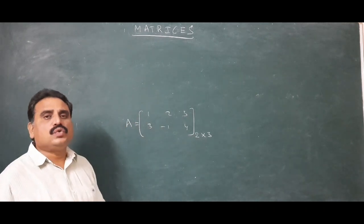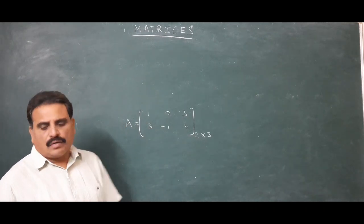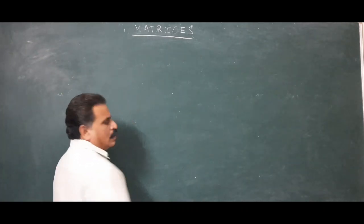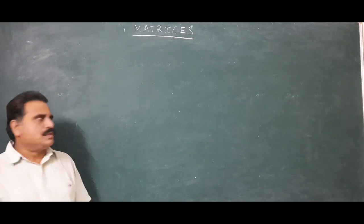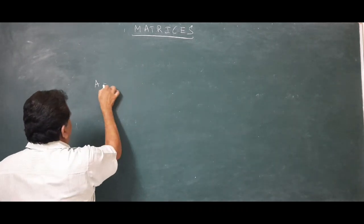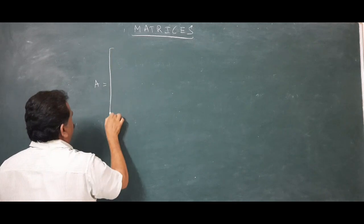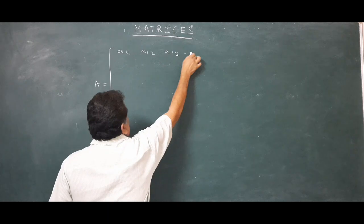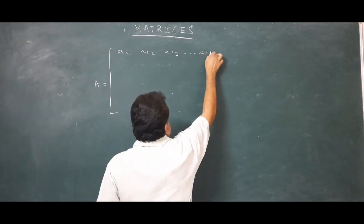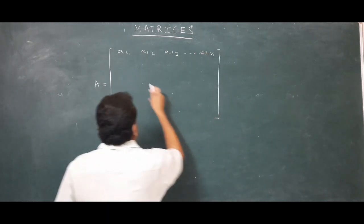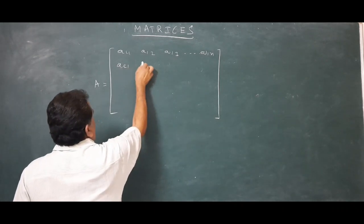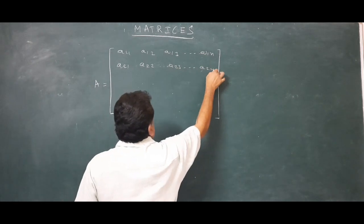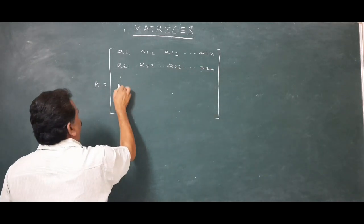In general, if M by N elements are arranged in rows and columns, the matrix is written as A equal to [A11, A12, A13, ..., A1N] for the first row; [A21, A22, A23, ..., A2N] for the second row, and so on.